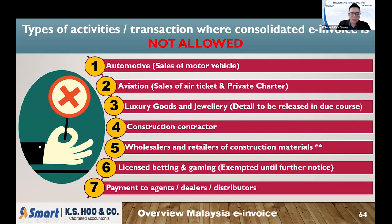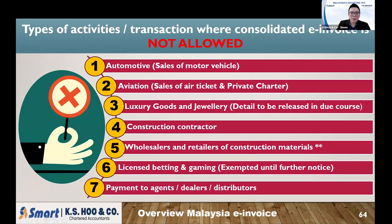The sixth is licensed betting and gambling. Previously, when you win money from a casino or from betting and they pay out a prize to you, they need to issue an e-invoice. But income tax later placed this category on hold — it is exempted until further notice. The seventh and last is payment to agents, dealers, and distributors. If you have commission or incentive payments to agents, dealers, and distributors, you cannot issue a normal invoice — you must have an e-invoice as support. In summary, these are seven types of businesses not allowed to issue consolidated e-invoices. The sixth is on hold, the third needs further clarification, and the fifth also awaits further guidance.